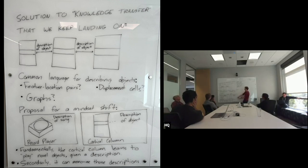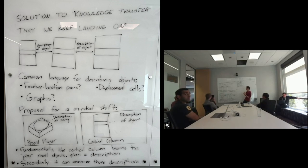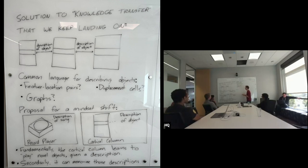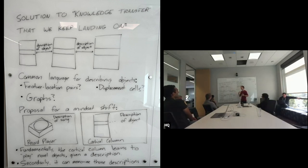I start to shift my thinking about what the fundamental thing the cortical column is doing. The fundamental thing is the cortical column learns to... okay, I have to introduce the analogy. I'm influenced by Douglas Hofstadter here, and Gödel, Escher, Bach, which I've read like two-thirds of. He uses a record player analogy. A record player is something that takes a description of a song and plays it. The information lies in the record. What the record player has been engineered to do is take a description of a song and play it.